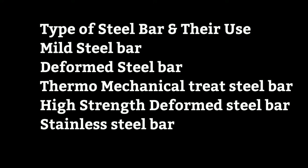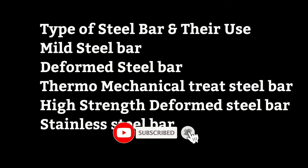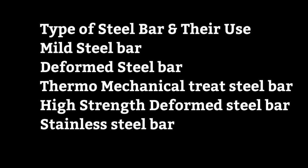Mild steel bars can be supplied in two grades. Grade 1 is designated as FE410S or Grade 60. Grade 2 is designated as FE410O or Grade 40. Medium tensile steel bars are designated as FE540WHD or Grade 75.